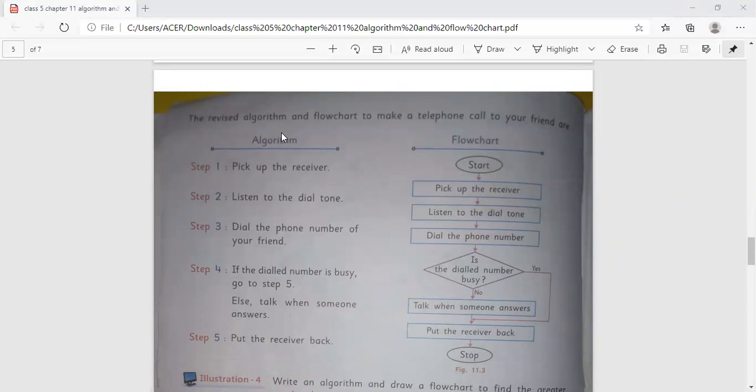The revised algorithm and flowchart to make a telephone call to your friends. This is your algorithm and the flowchart. Start, pick up the receiver, listen to the dial tone, dial the phone number. Is the dial number busy? Yes. Talk when someone answers, put the receiver back and then stop.